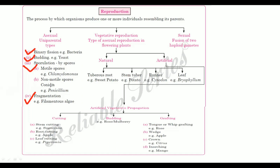Namaskar Vidyarthi Mitra, welcome to RBC online. Today we are discussing artificial vegetative reproduction. They are cutting, budding and grafting.